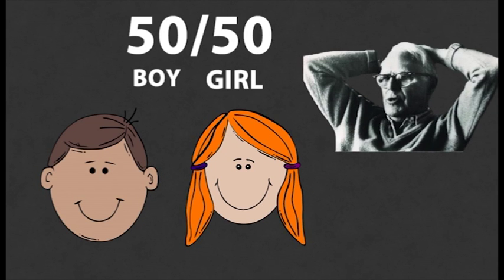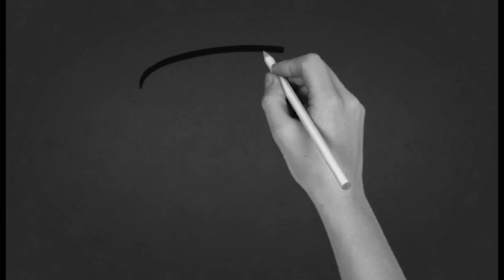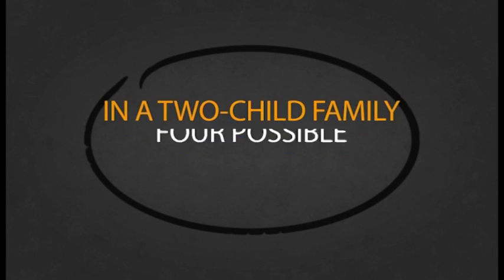But Gardner argued that the chance is really a third. That's not possible, you might think. But really, in a two-child family, there are four possible combinations.